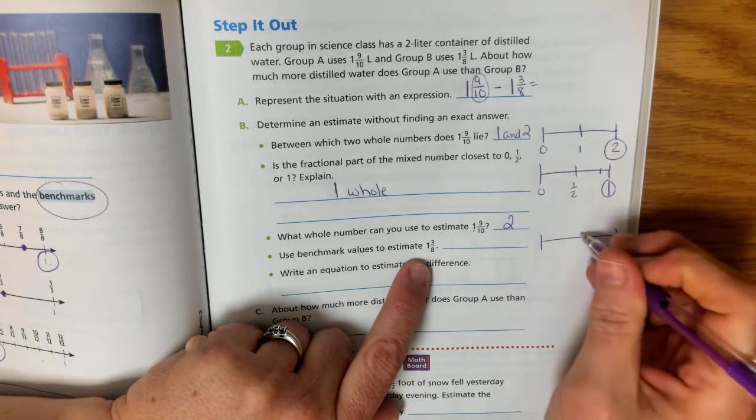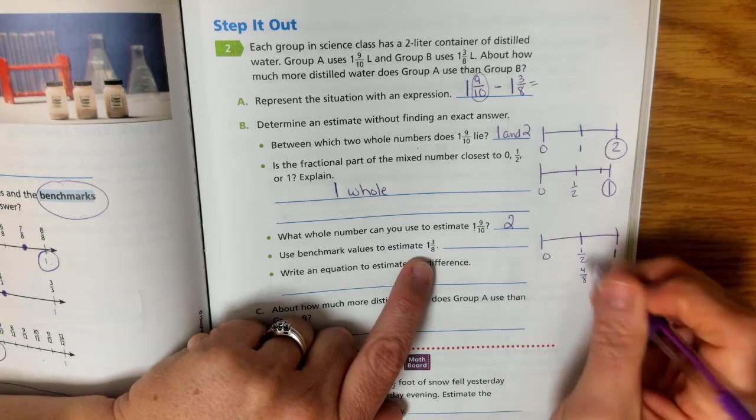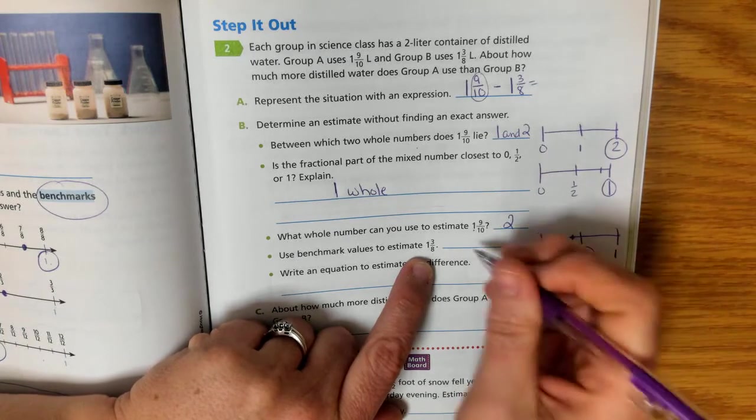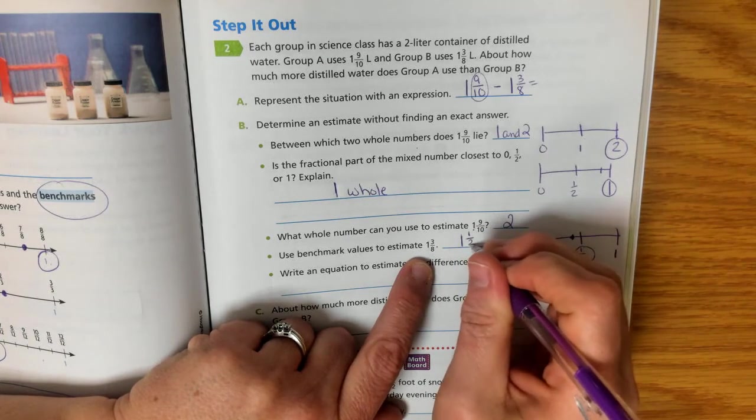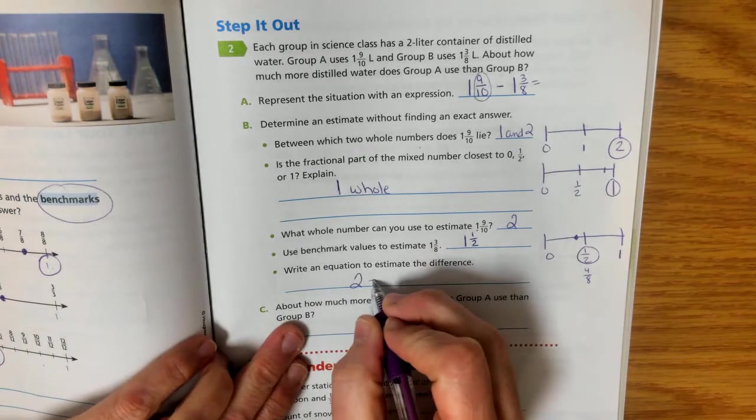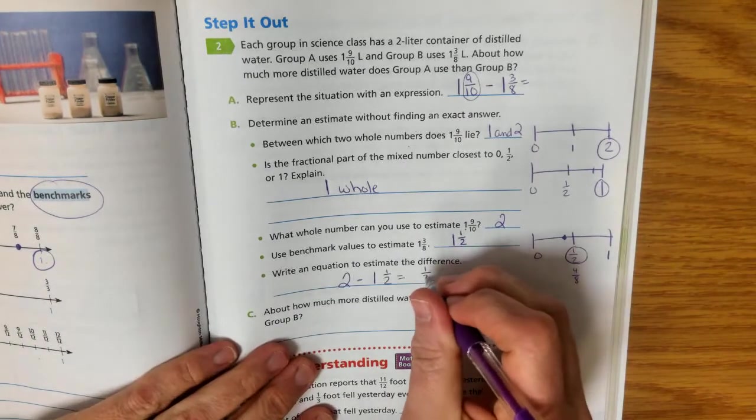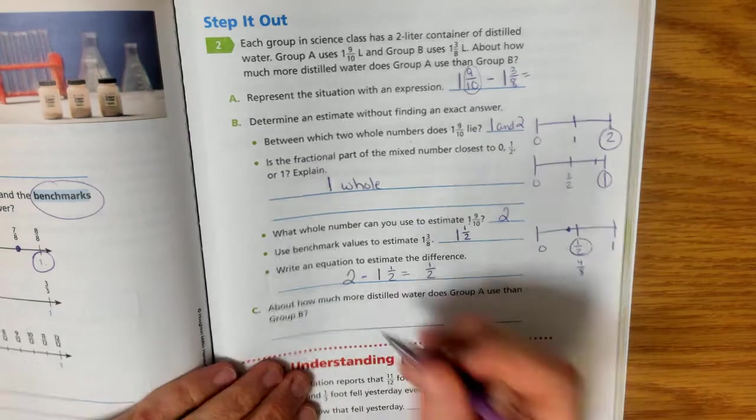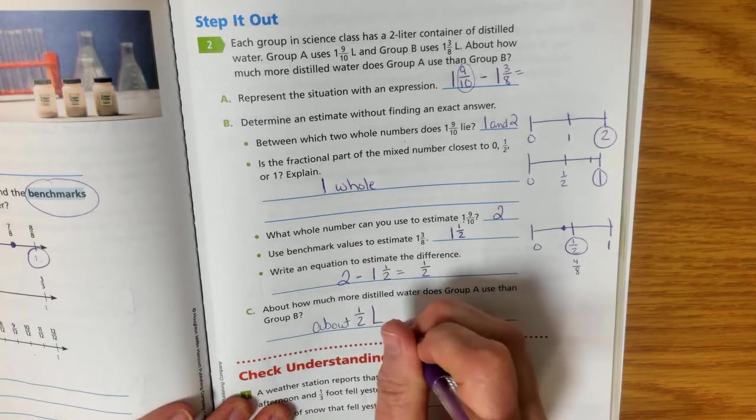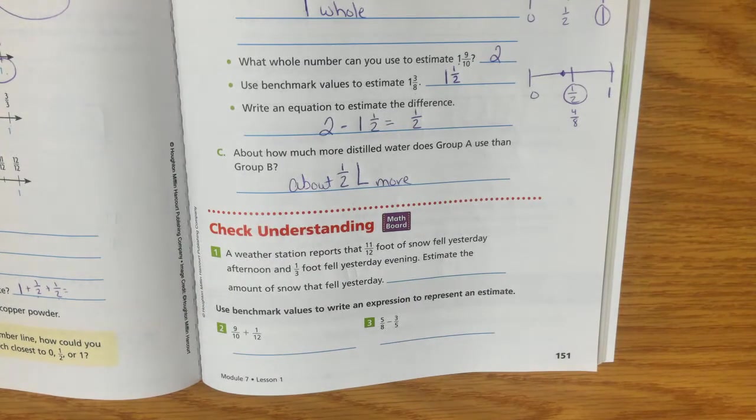Then we're going to use benchmarks to estimate the value of 1 and 3 eighths. Well, let's look at our 3 eighths. 0, 1 half, and 1 whole. I know that 4 eighths is the same as 1 half, and this is a little less than that, right? It would be over here, so it's closest to 1 half. So this is closer to 1 and 1 half. So we need to now subtract 2 minus 1 and 1 half equals 1 half. So group A used about 1 half liter more. Not exactly, but almost.